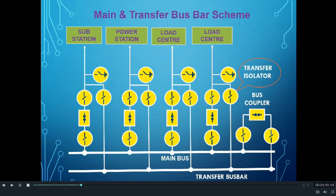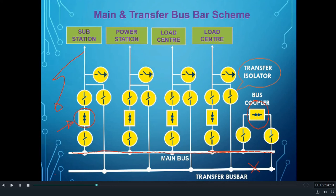Now we will see how LBB operates in a main and transfer busbar scheme. In main and transfer busbar scheme, all the feeders are connected to the main busbar and the transfer busbar is kept isolated — that is, the bus coupler connected between the main and transfer busbar is kept open always in normal condition. Hence, in this scheme also, due to the failure of a particular circuit breaker, all other circuit breakers connected to the main bus will be operated because of the generation of LBB. The LBB scheme for the single busbar scheme as well as the main and transfer busbar scheme will therefore be the same.